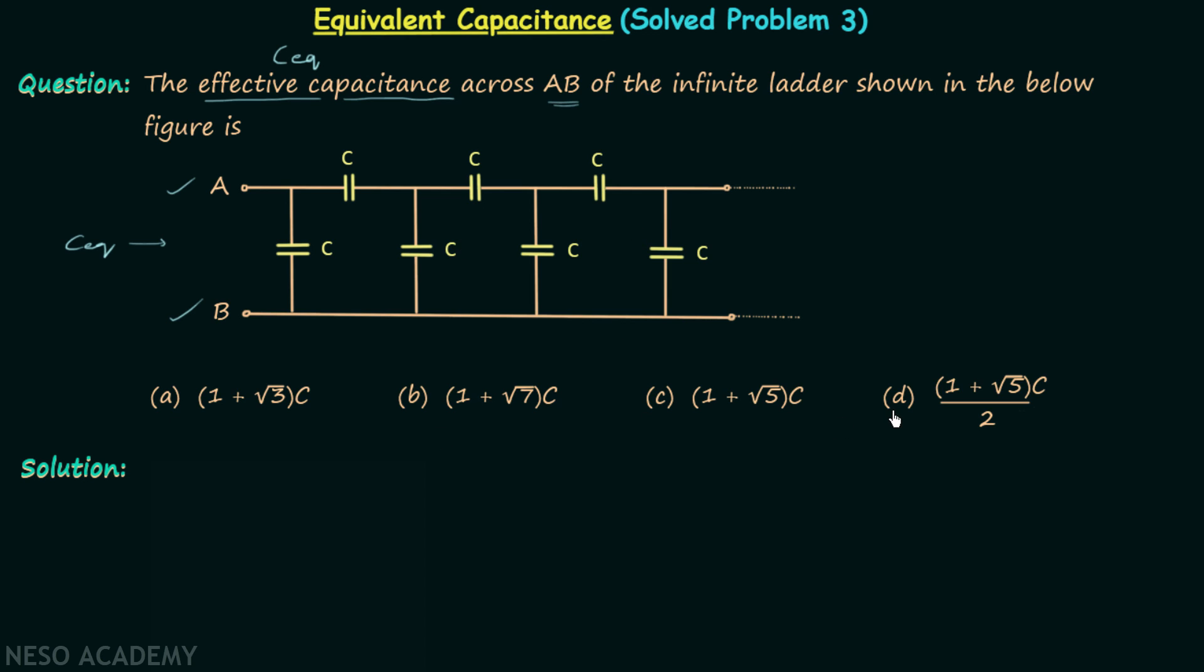Four options are given in the problem and we will begin our solution by selecting the smallest repeated section, like we did in case of resistors. You can see that this is the smallest repeated section.